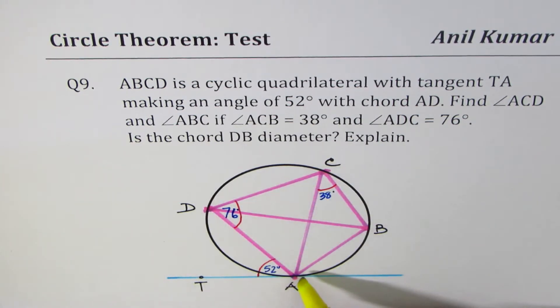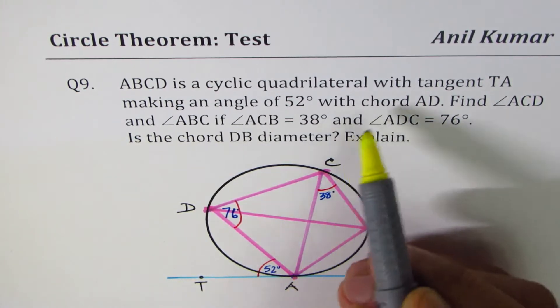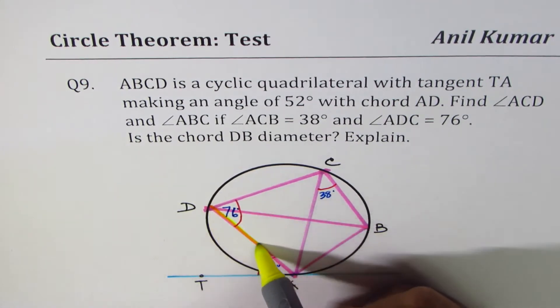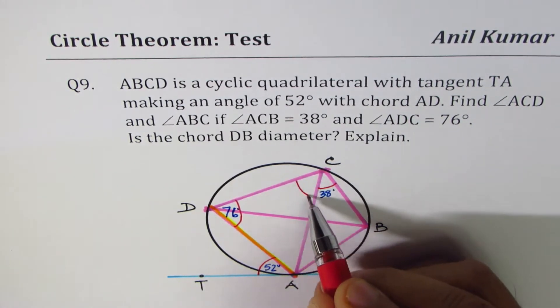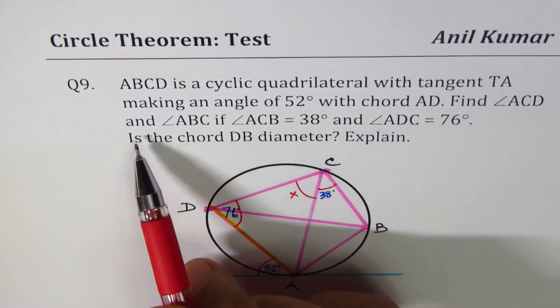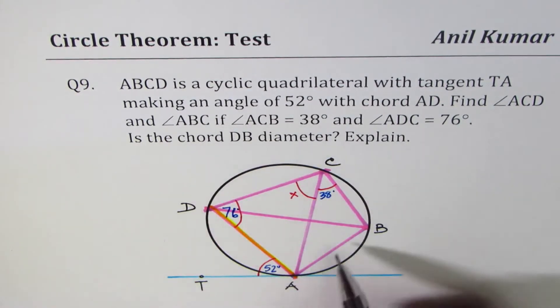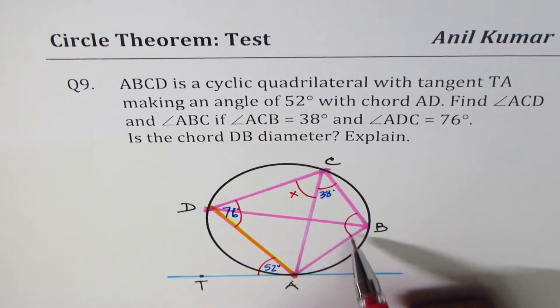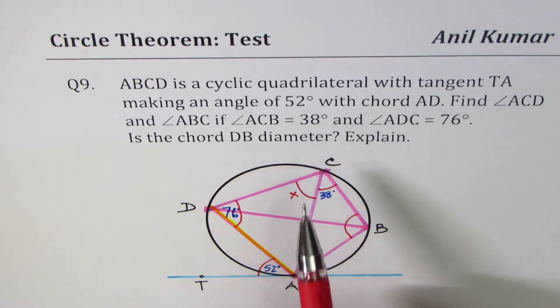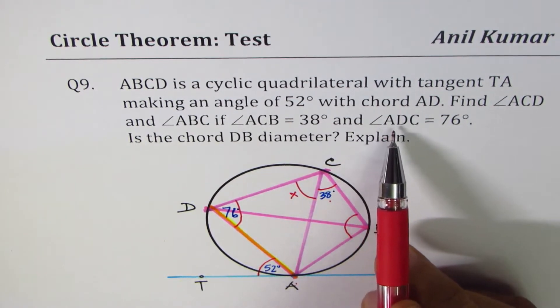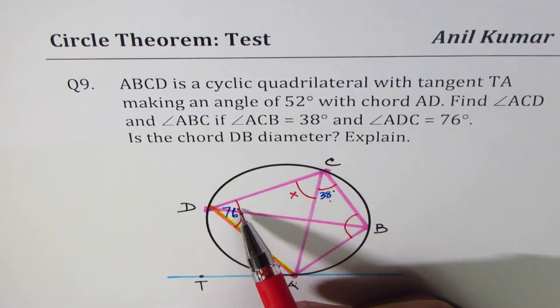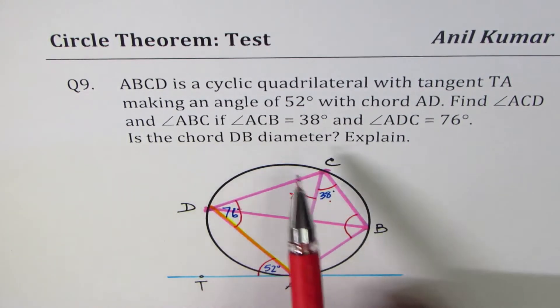TA is the tangent making an angle of 52 degrees with the chord DA. Find angle ACD - we have to find this angle - and angle ABC, meaning this angle, if angle ACB is 38 degrees and angle ADC is 76 degrees.